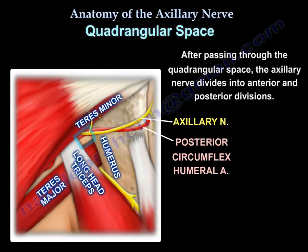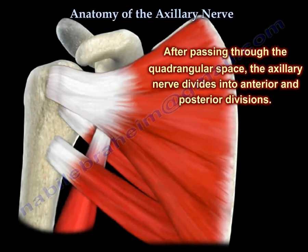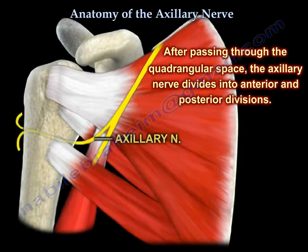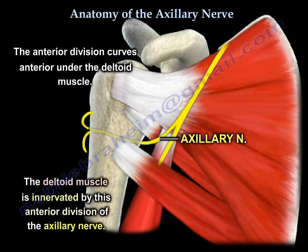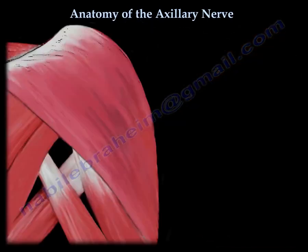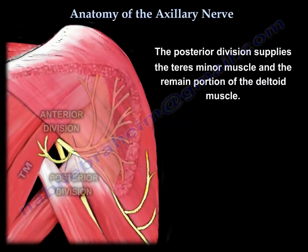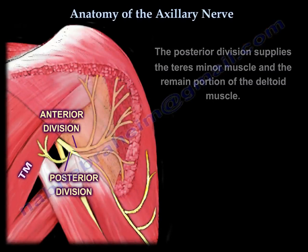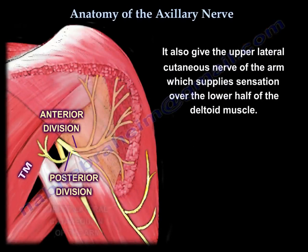Immediately after passing through the quadrangular space, the axillary nerve divides into anterior and posterior divisions. The anterior division curves anteriorly under the deltoid muscle and innervates the deltoid. The posterior branch supplies the teres minor and the rest of the deltoid. It also gives the upper lateral cutaneous nerve of the arm, which supplies sensation over the lower half of the deltoid.